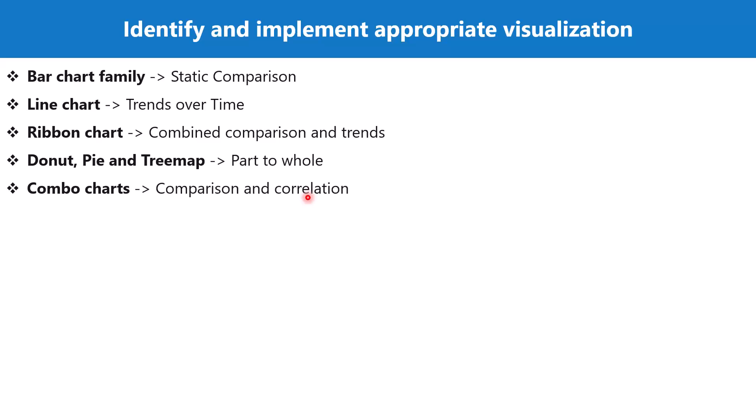Then there is the funnel chart visual, which is usually used to show the sequential flow of a process. If you have a marketing funnel or a sales funnel, at every stage of that funnel you have certain numbers, and the best way to show those numbers is through a funnel chart.